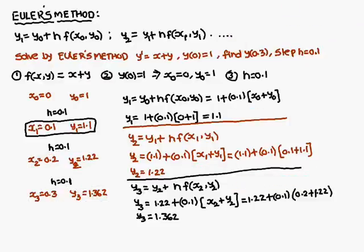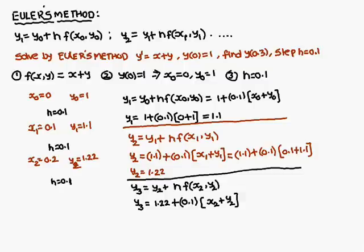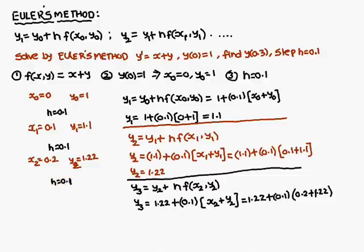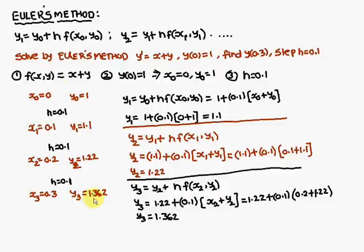So with h equal to 0.1, you come across x3 equal to 0.3 and y3 is 1.362. This is the main heart of Euler's method. This diagrammatic model you always have to remember. Thank you.